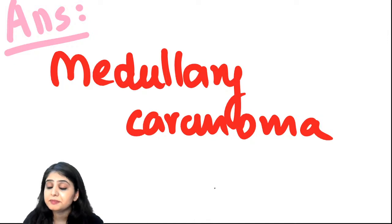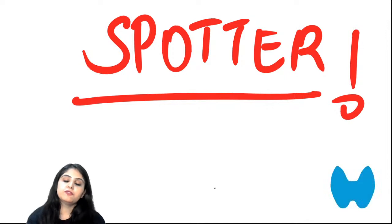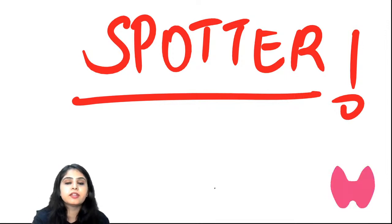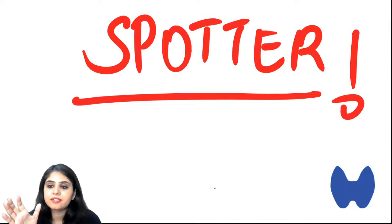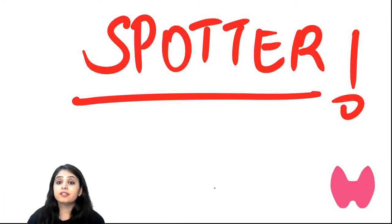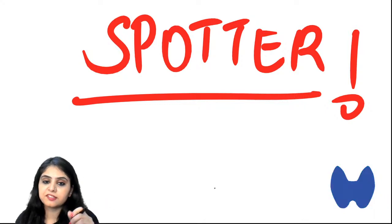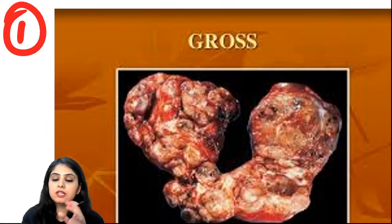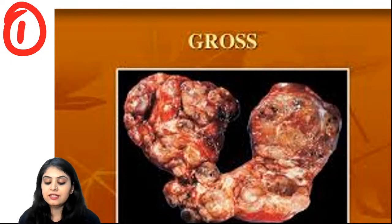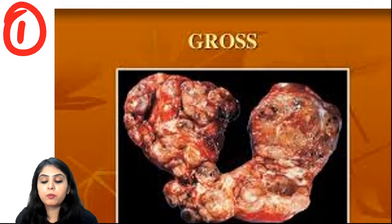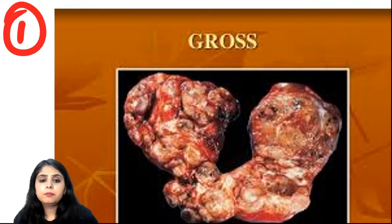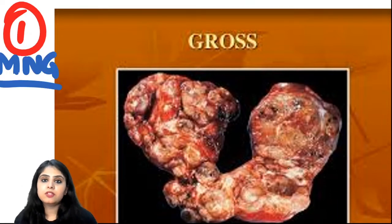Thyroid cancers are done. Now two spotters. First spotter: a gross thyroid showing multiple nodules of varying sizes - some big, some small, some tiny. Everyone correctly identified this as multinodular goiter (MNG). A straightforward spotter.